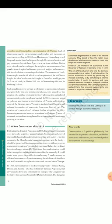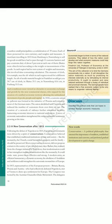Each of these 39 states possessed its own currency, and weights and measures. A merchant traveling in 1833 from Hamburg to Nuremberg to sell his goods would have had to pass through 11 customs barriers and pay a customs duty of about 5% at each one of them. Duties were often levied according to the weight or measurement of the goods. As each region had its own system of weights and measures, this involved time-consuming calculation. The measure of cloth, for example, was the 'Elle' which in each region stood for a different length — an Elle of textile bought in Frankfurt would get you 54.7 cm of cloth, in Mainz 55.1 cm, in Nuremberg 65.6 cm, in Freiburg 53.5 cm. Such conditions were viewed as obstacles to economic exchange and growth by the new commercial classes, who argued for the creation of a unified economic territory allowing the unhindered movement of goods, people and capital. In 1834, a customs union or Zollverein was formed at the initiative of Prussia and joined by most of the German states. The union abolished tariff barriers and reduced the number of currencies from over 30 to 2. The creation of a network of railways further stimulated mobility, harnessing economic interests to national unification. A wave of economic nationalism strengthened the wider nationalist sentiments growing at the time.